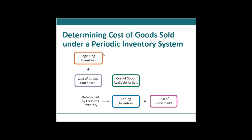Under this periodic inventory system, we don't really know the specific amount for theft, breakage, or supplier shortage. We just know: we started with this much, we bought this much, we were left with this much, and the difference is cost of goods sold. So it's less precise and provides less information for improving security going forward. However, it's easier — and now we're going to look at the perpetual inventory system.